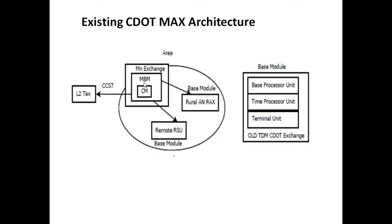These ANRACs are parented to the nearby CDOT SBM, MBM, or NT exchange. With this development, all remote ANRACs are maintained from the SBM or MBM. CDOT MAX exchanges were installed to cover certain areas, having local BM and remote BM controlled by MBM or SBM. These main exchanges were connected to L2TACs for further routing.